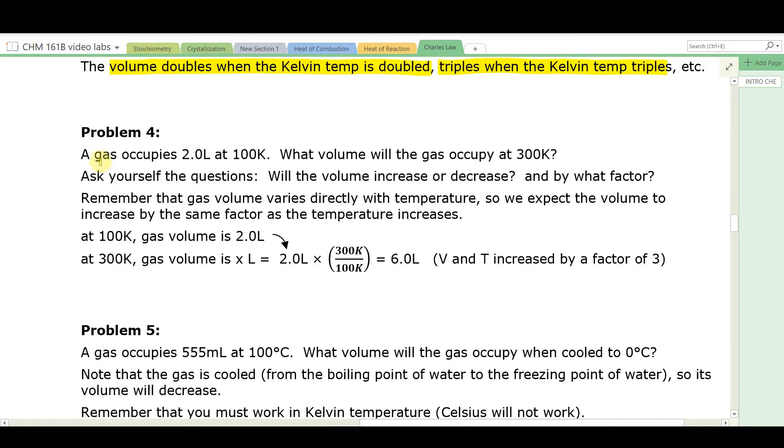Problem number 4. A gas occupies 2 liters at 100 Kelvin. What volume will the gas occupy at 300 Kelvin? Will the volume increase or decrease is your first question. Well, it's going to increase because the temperature is increasing. By what factor? It will increase by the same factor as the temperature is increasing. On paper, we could write it this way. This is in our head how we would think it. At 100 Kelvin, the gas volume is 2 liters. At 300 Kelvin, it's going to be greater by that factor, right? So, x liters, start with what you want to solve for, 2 liters. Make a ratio that makes sense. It's going to increase by the same factor. The Kelvin temperature increases by a factor of 3, 6 liters.